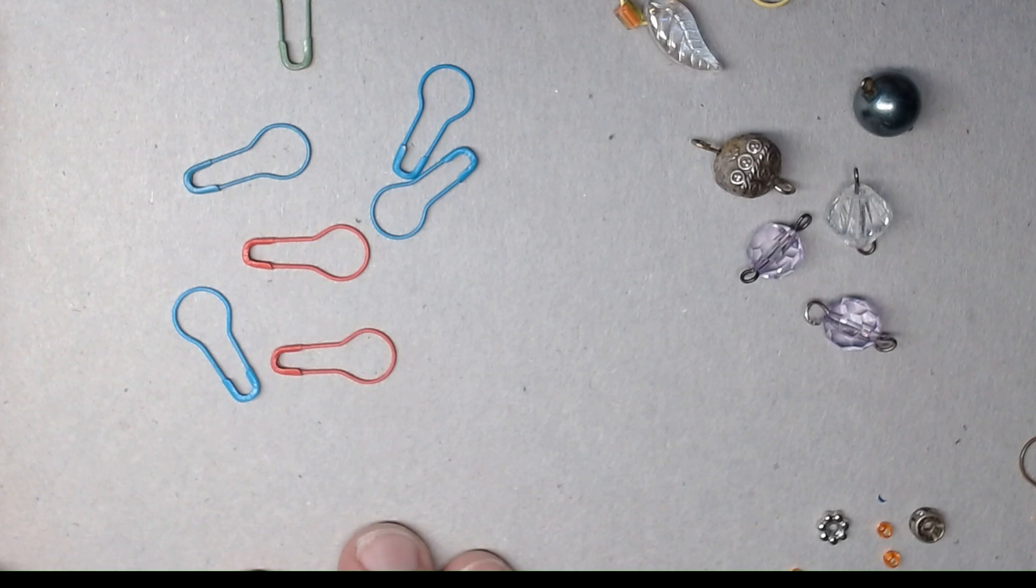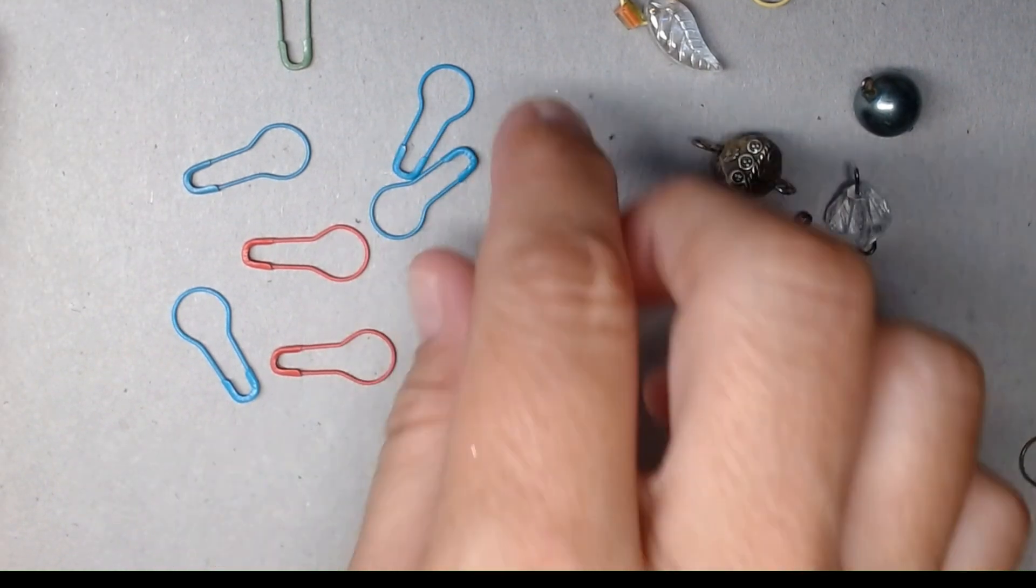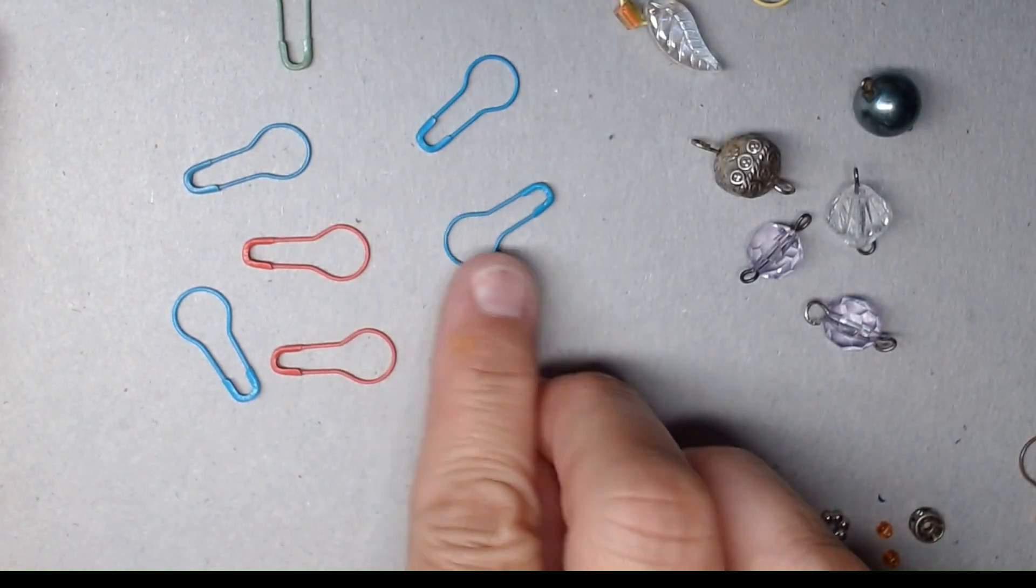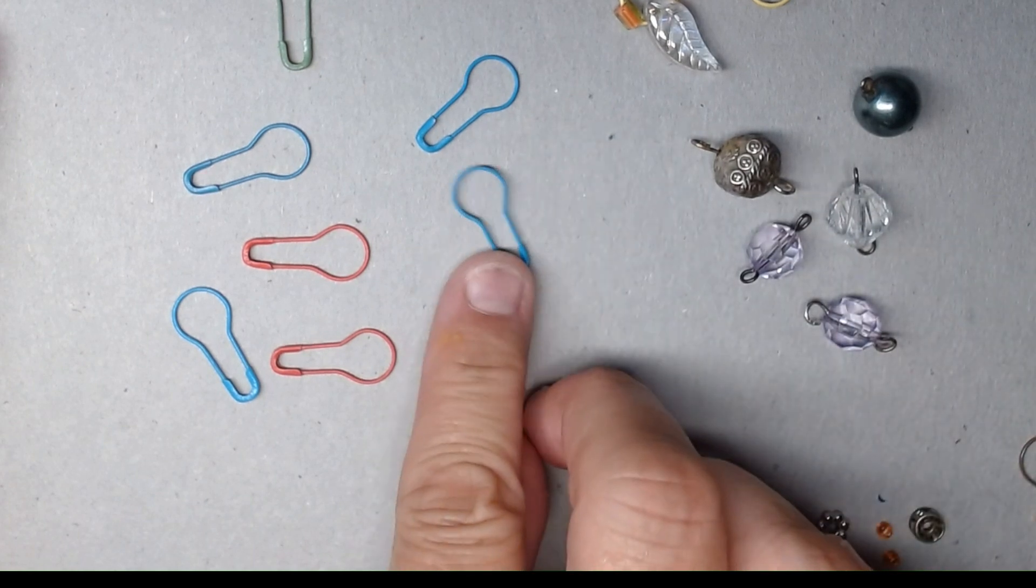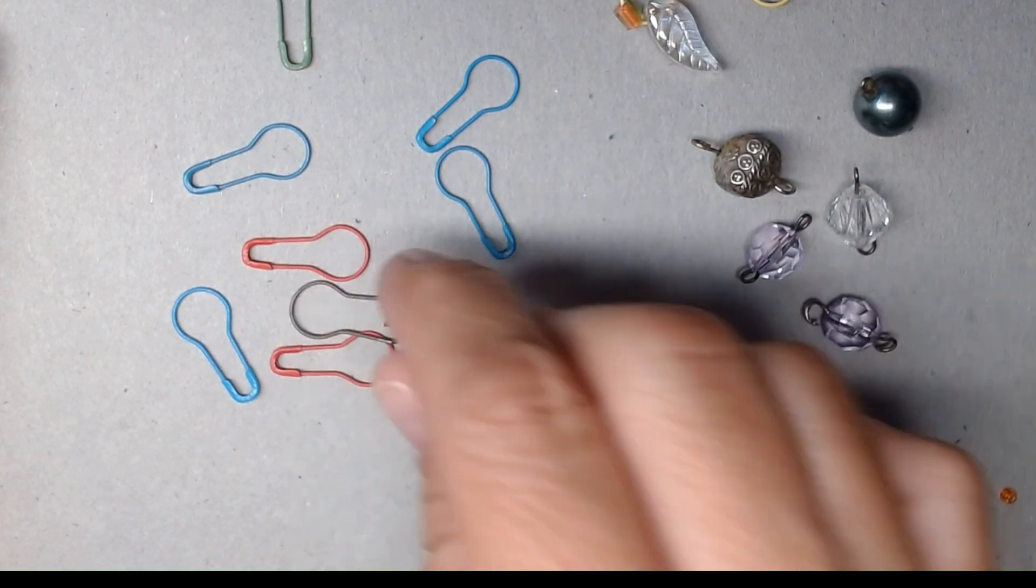Okay, so here we are. We have everything we need to make our stitch markers. We have these little pins. Now, I got these off of Amazon. They're fancy little safety pins, and they're perfect for stitch markers.